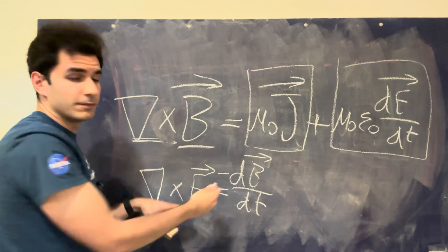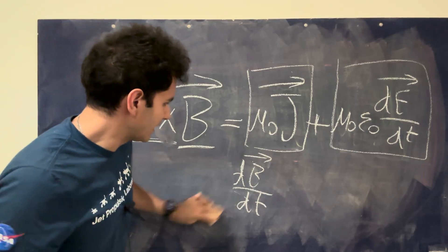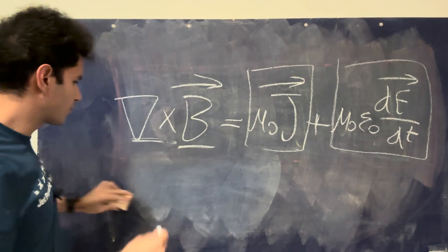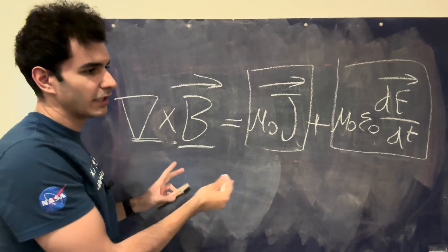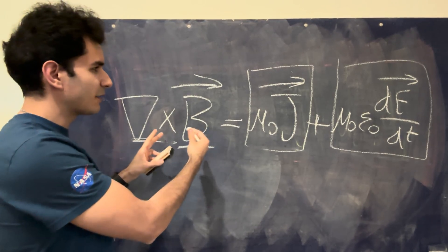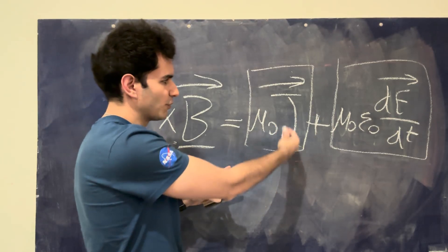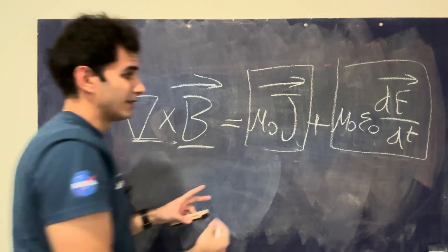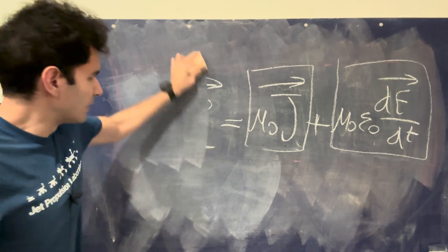So we basically start seeing that electric fields and magnetic fields are these weird things where they can exist on their own. The electric field can exist on its own. The magnetic field needs some type of electrical behavior to create it, whether it's the charge moving through a wire or whether it's the electric field itself changing. So that starts becoming a little bit interesting.